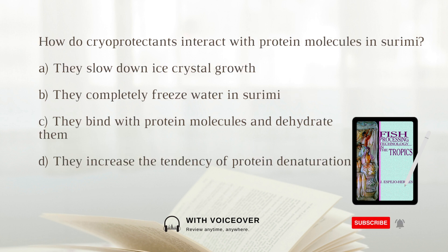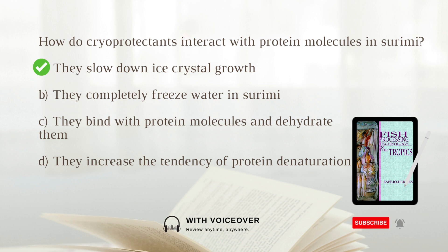How do cryoprotectants interact with protein molecules in surimi? A. They slow down ice crystal growth. B. They completely freeze water in surimi. C. They bind with protein molecules and dehydrate them. D. They increase the tendency of protein denaturation. Answer: A. They slow down ice crystal growth. They bind with protein molecules and actually hydrate them, slowing down ice crystal growth.